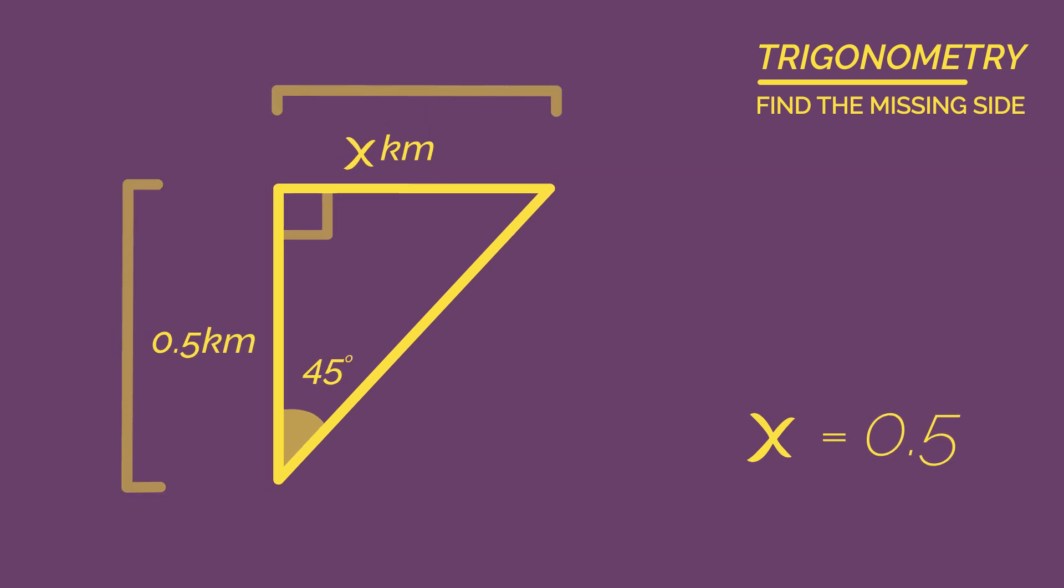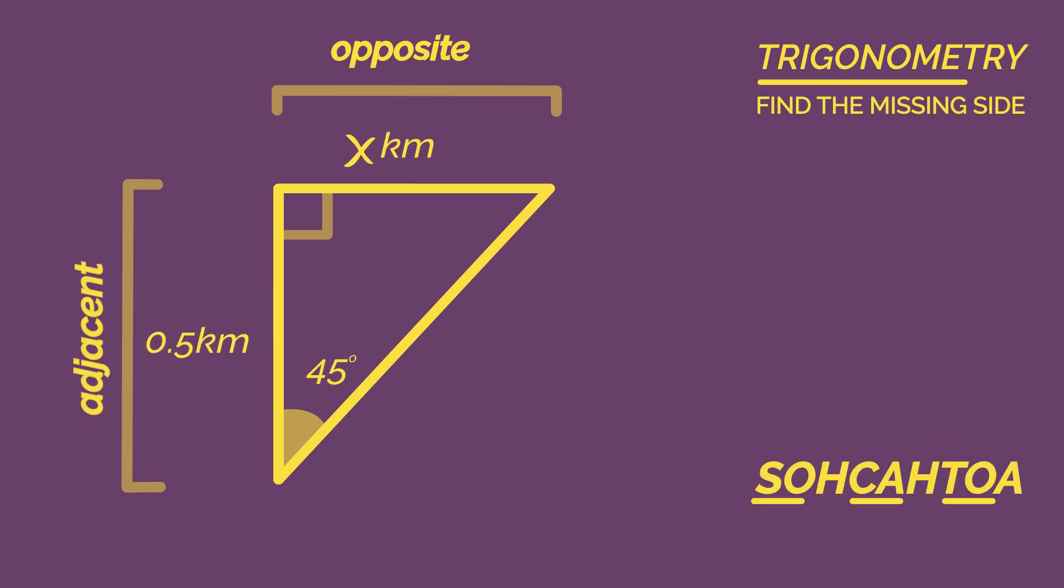So the x is opposite because it is opposite of 45 degree angles. And 0.5km is the adjacent because it is next to the angle. So with O and A, should we use sine, cos, or tan? Hopefully you thought tan.